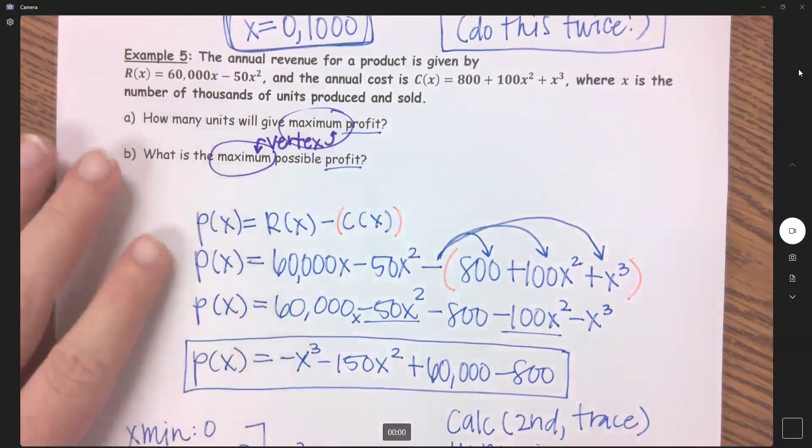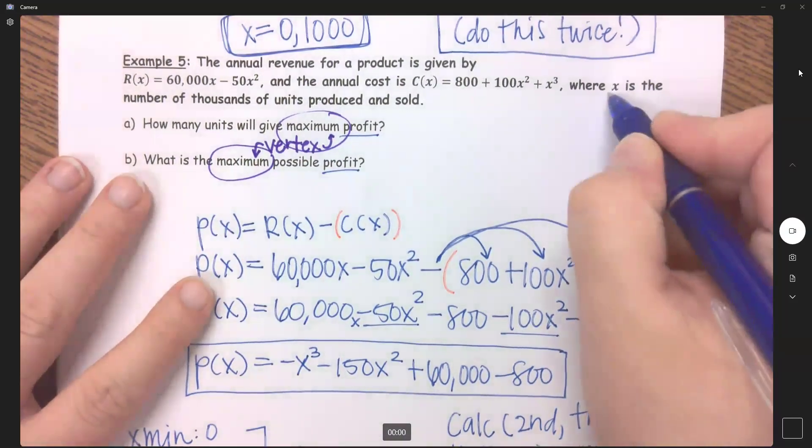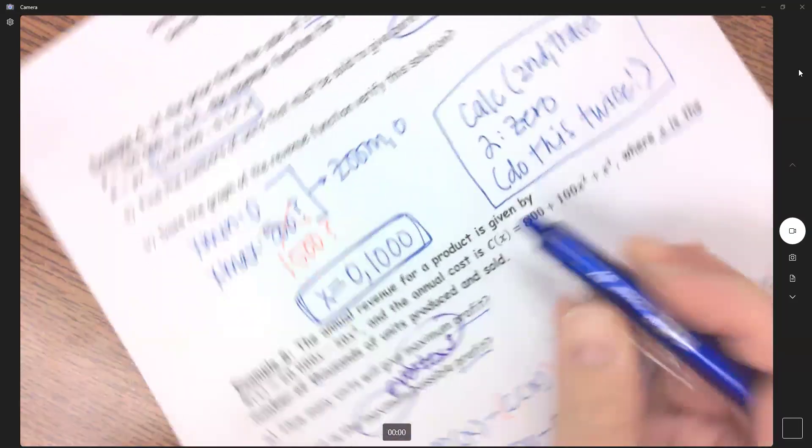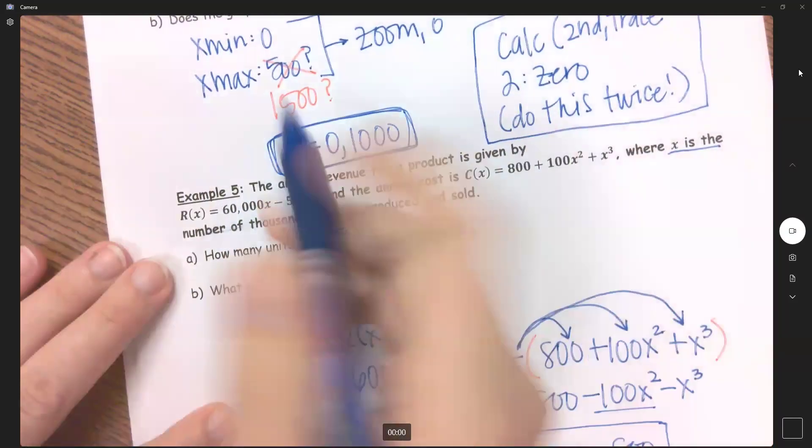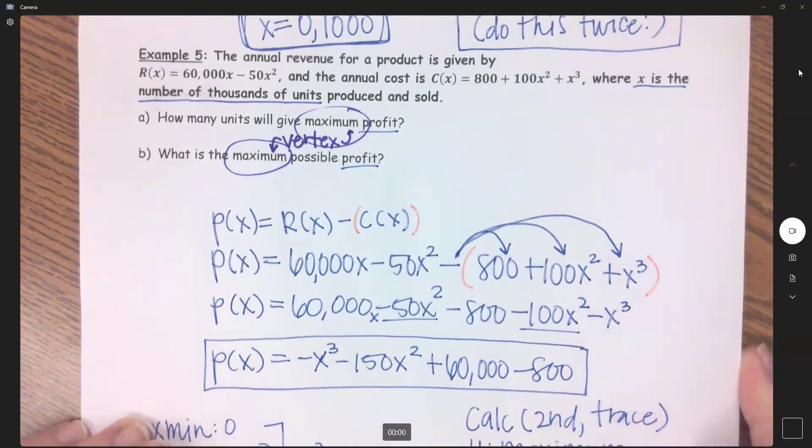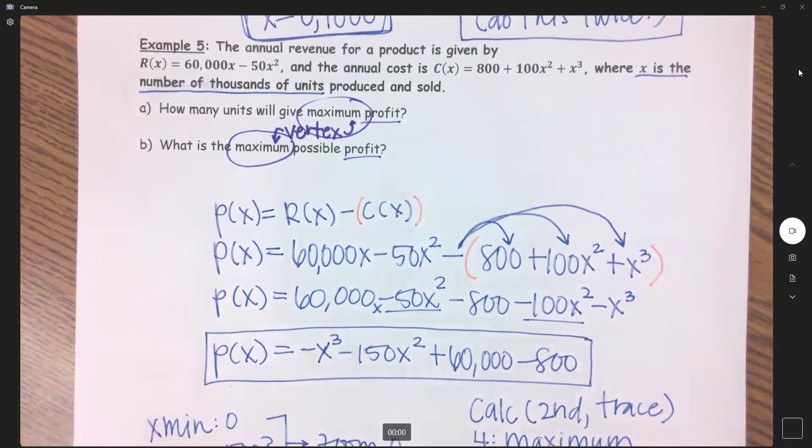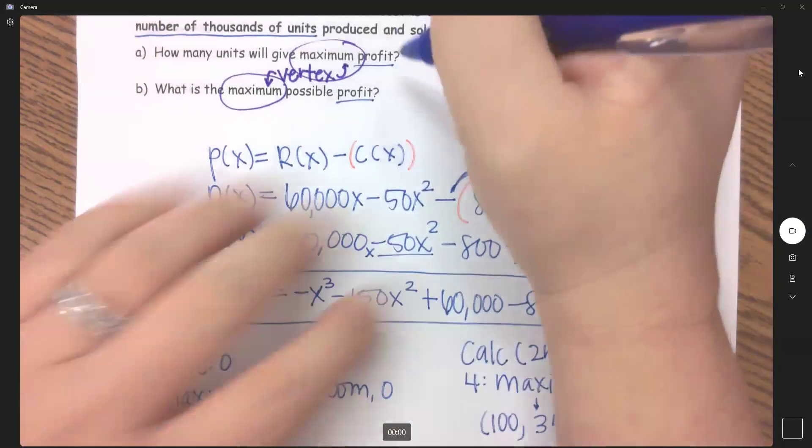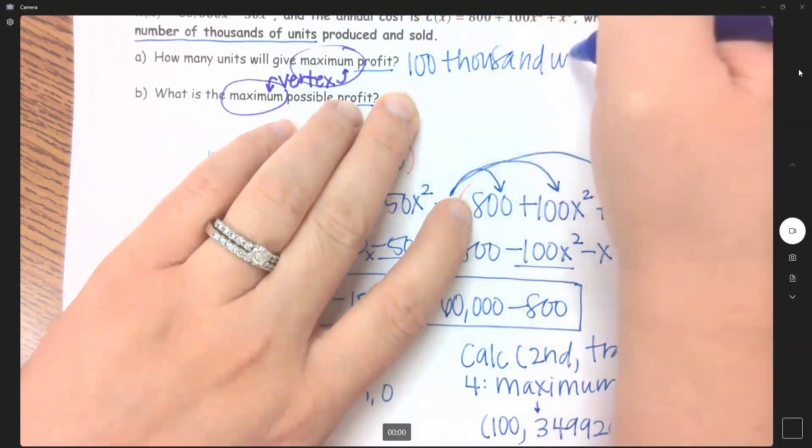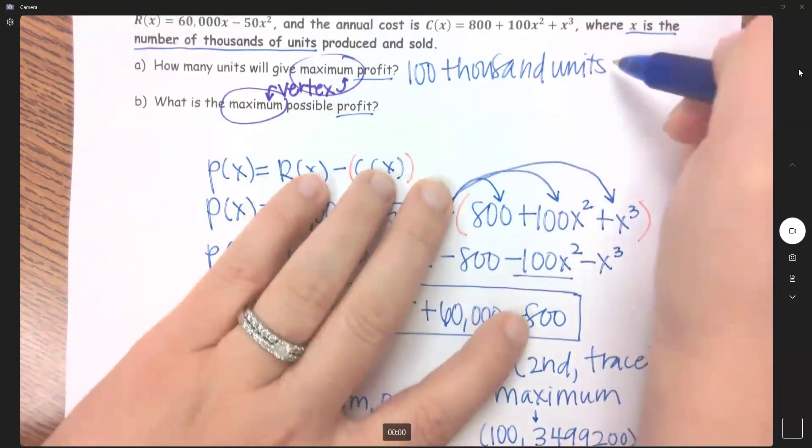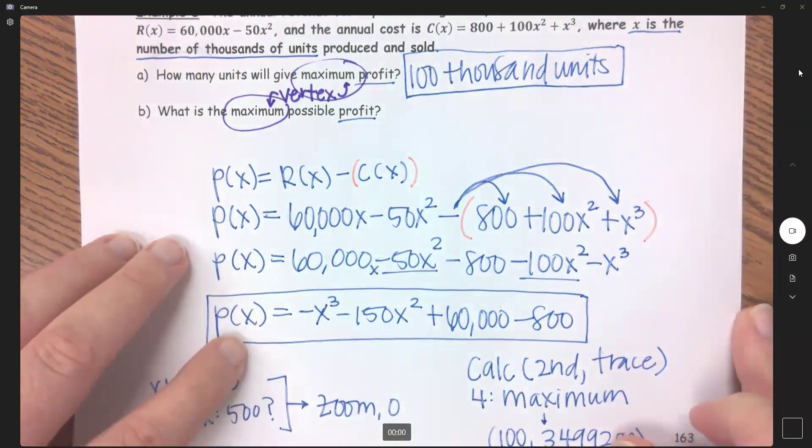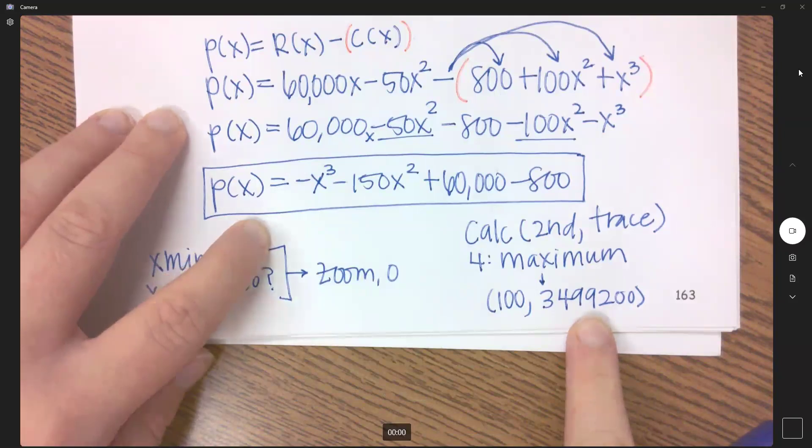So all of that to answer this question: how many units will give my maximum profit? Well, x is the number of thousands of units. So if I have 100 here, this means we have 100,000 units. And if I sell 100,000 units, then this right here will be my profit. We will have a profit of $3,499,200.